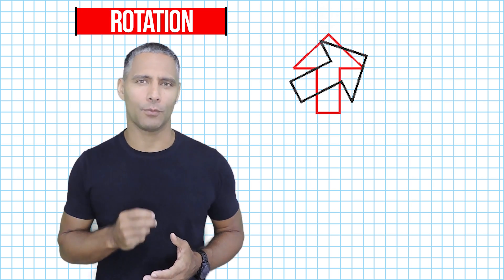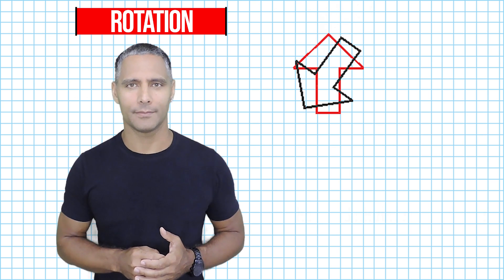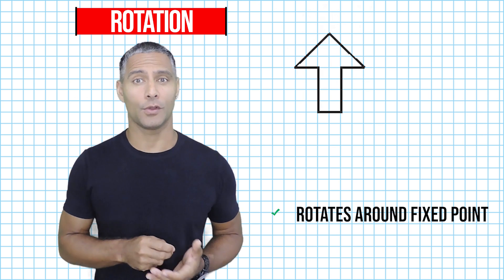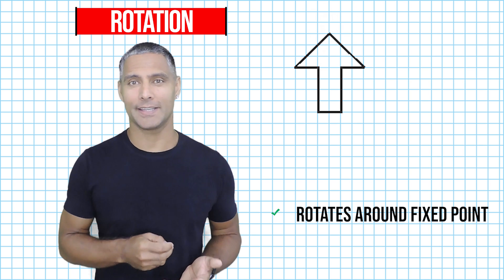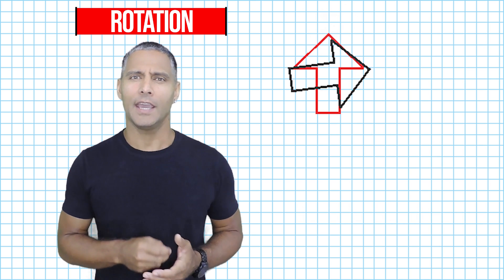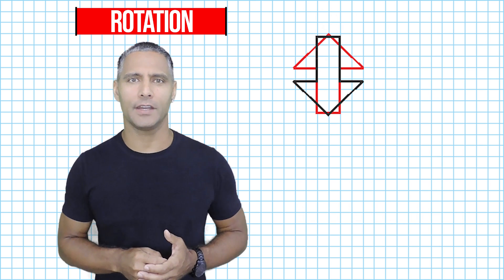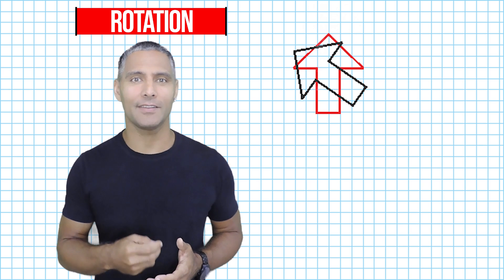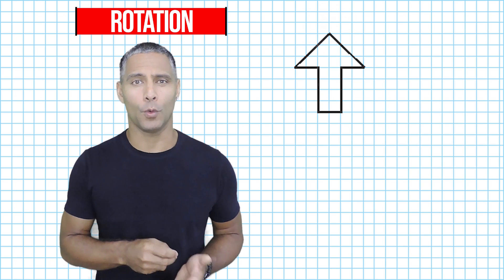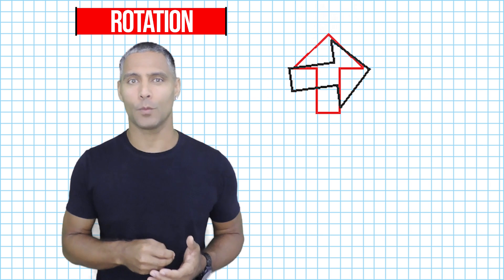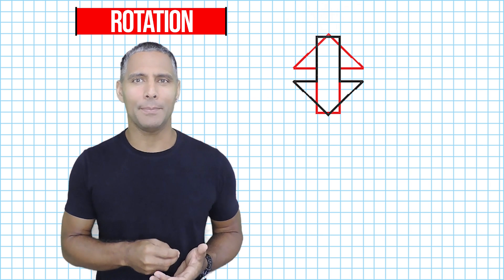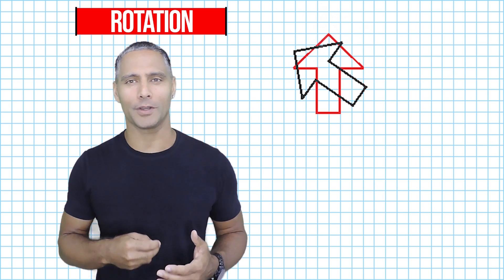Any object being rotated will always do so around some fixed point. Sometimes that fixed point is located inside the object, like the example shown on the screen. And other times, an object is rotated around a fixed point located outside of the object. The fixed point may be the origin of a coordinate plane where the x and the y-axis intersect, or it may be any arbitrary point on the coordinate plane.